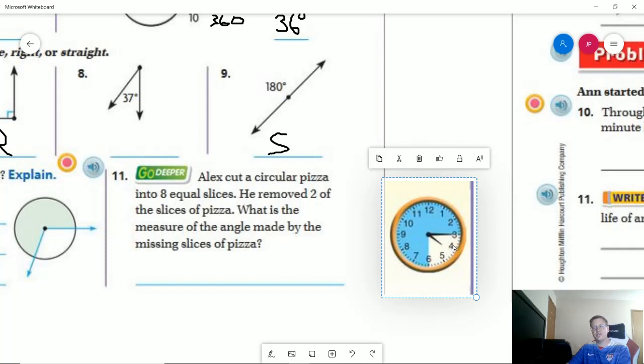And then do the same thing this way to get eight pieces. So if I took two of those pieces away that would be about this. So I can figure out the angle made by the missing slices of pizza by relating it back to a clock. So my pieces would be here and so this would be one and this would be two. So this would be a 90 degree angle.